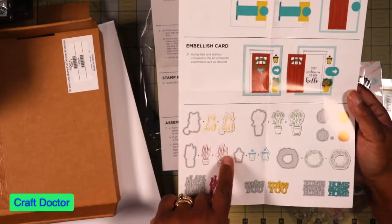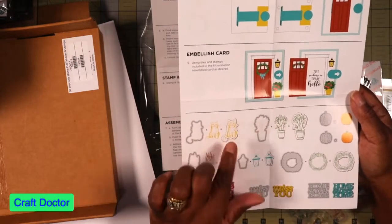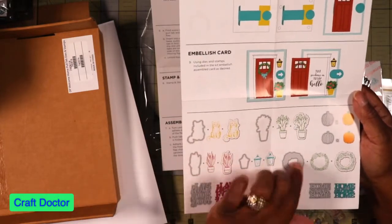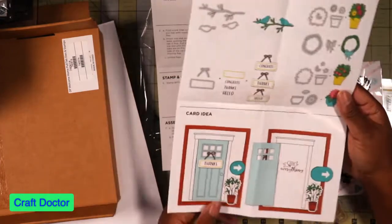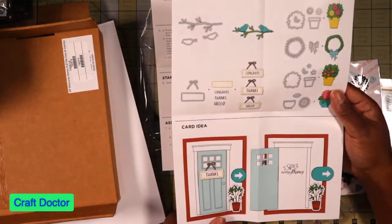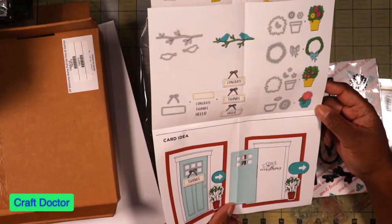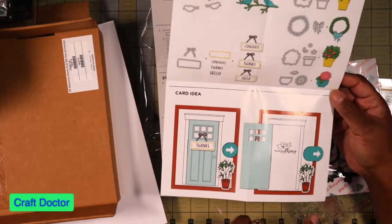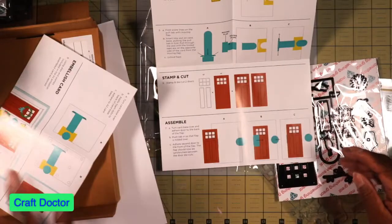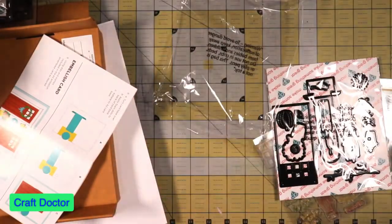This kind of reminds me of that Anna Griffin set. It had all of the stuff to go with it, like the wreath and all that stuff. Yes, this is super cute and it has the flowers and stuff in here. Oh that's cute - thanks for everything. I love that. We're going to do this one, we're going to make this one. Yeah, okay, so let's look at our dies.